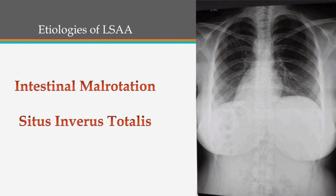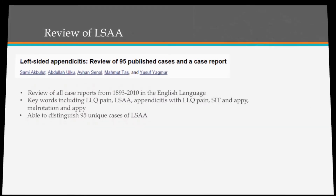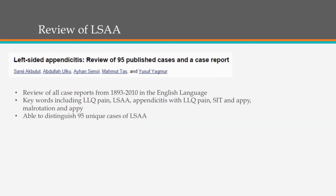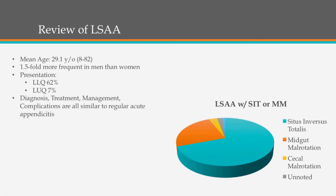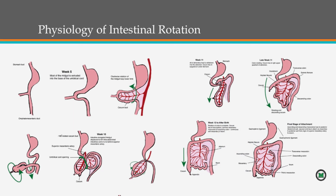Situs inversus totalis is when everything turns on itself and is mirrored in the opposite direction. People say never get an x-ray for appendicitis, but if you're thinking it might be atypical and suspect situs inversus totalis, a chest x-ray might give you some clues. I did a little review of the literature on left-sided appendicitis — there's not a whole lot, but there was a case review of 95 cases. Most of those found were actually situs inversus totalis, though the numbers may be skewed since those cases are probably published more. Basically, there's not a whole lot of difference in how you manage it compared to typical appendicitis.